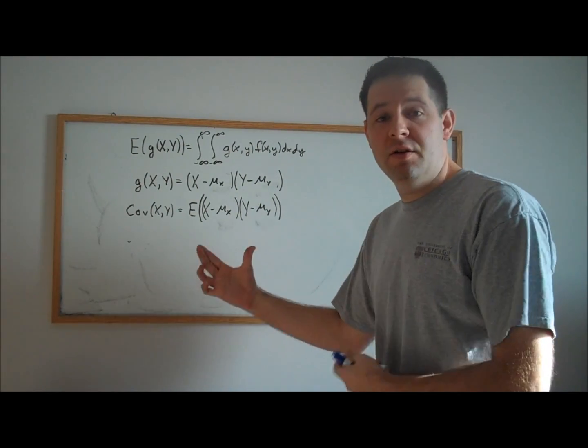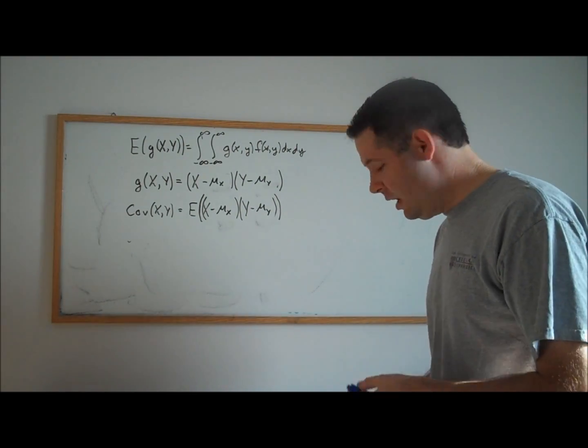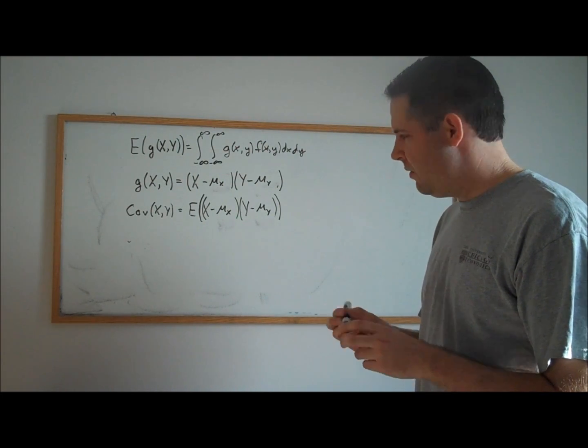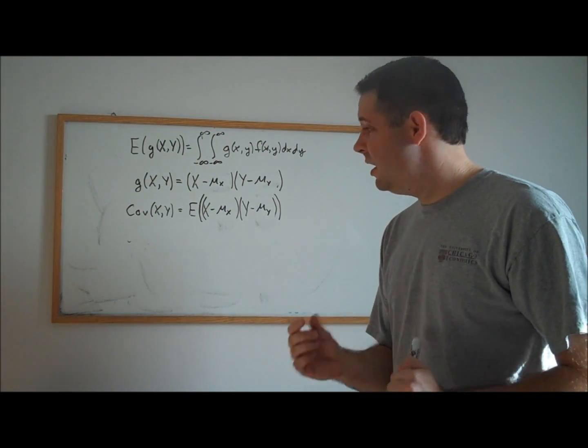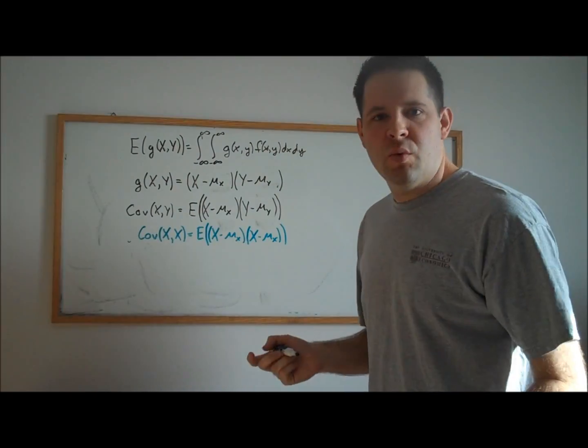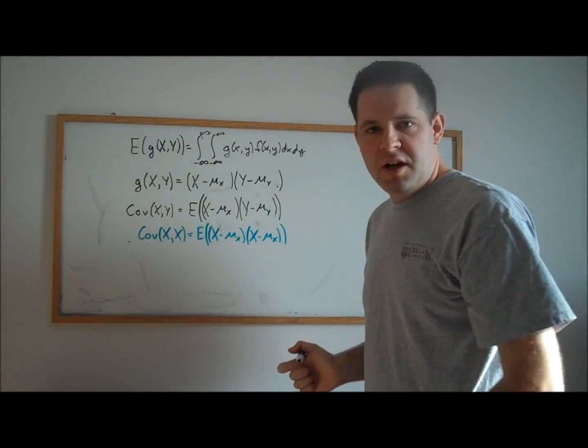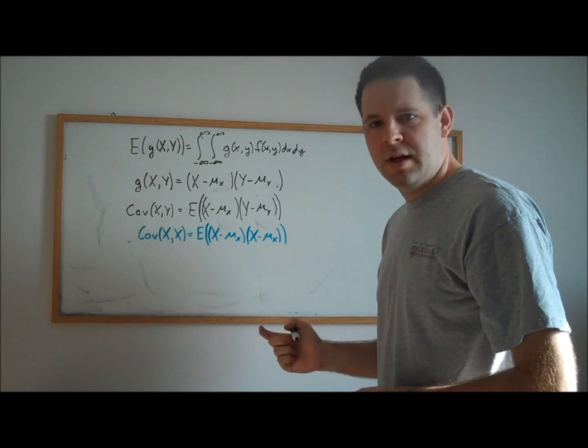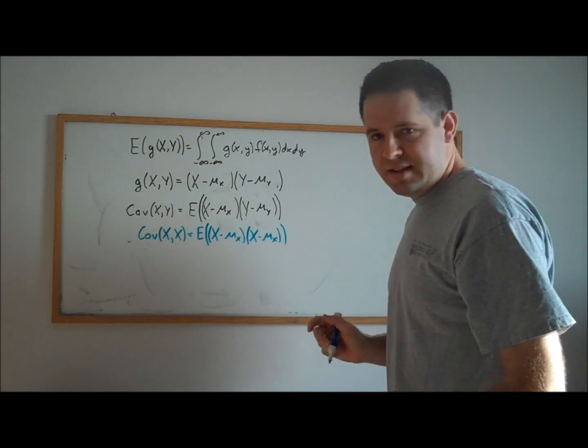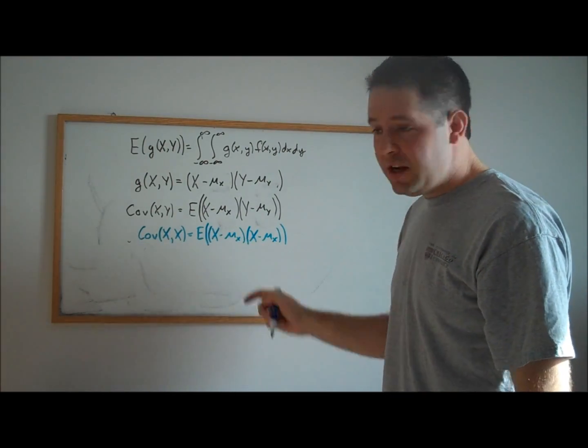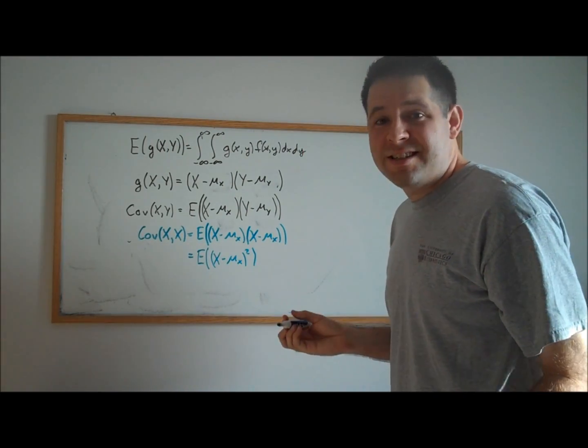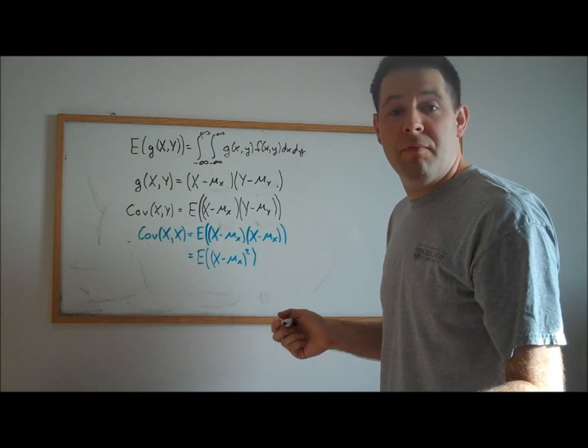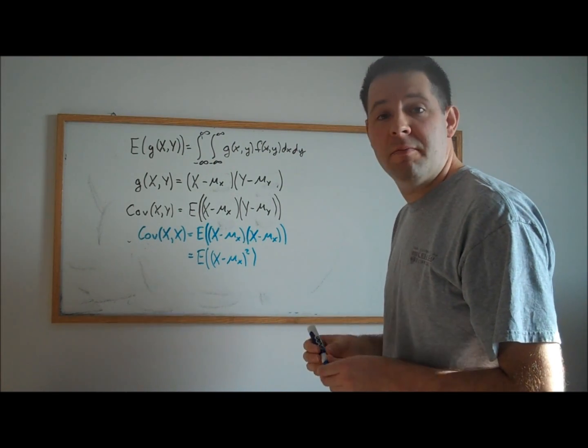There are several interesting and very useful properties of covariances. The first useful property is that the covariance of a random variable with itself is just the variance. We write out the expectation version of the covariance, and inside here this is the expectation of X minus its expectation squared, which is exactly our formula for variance.